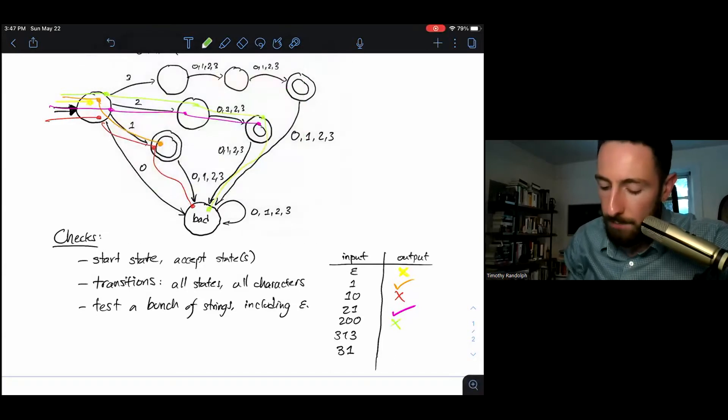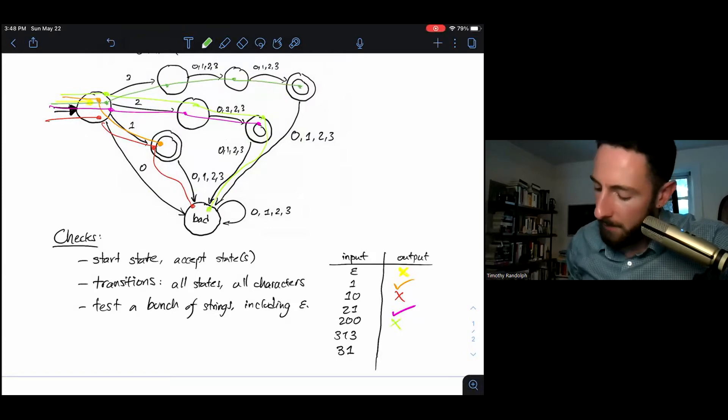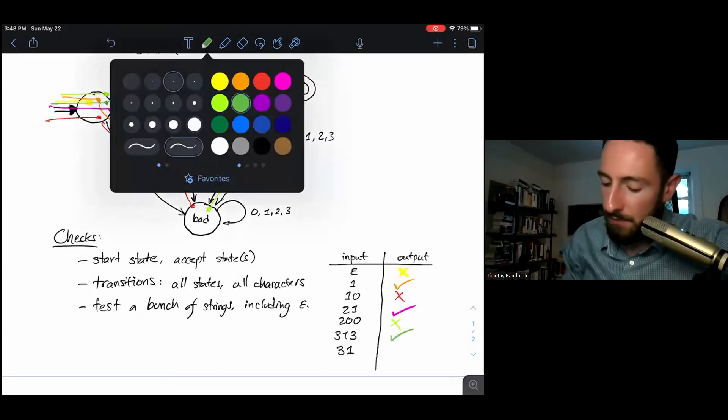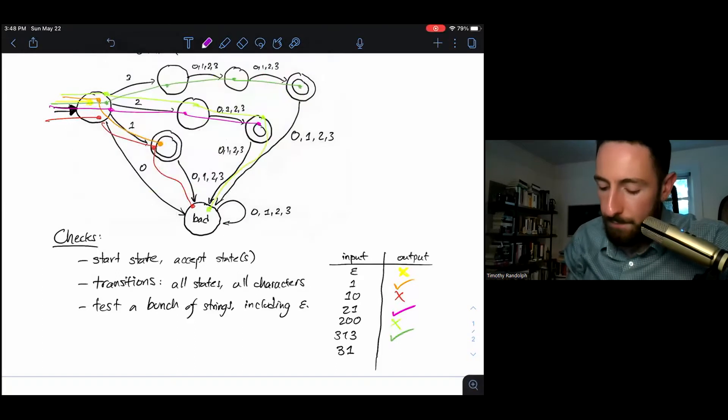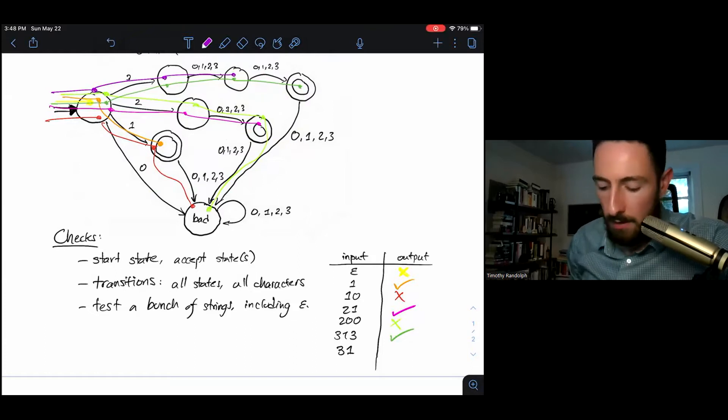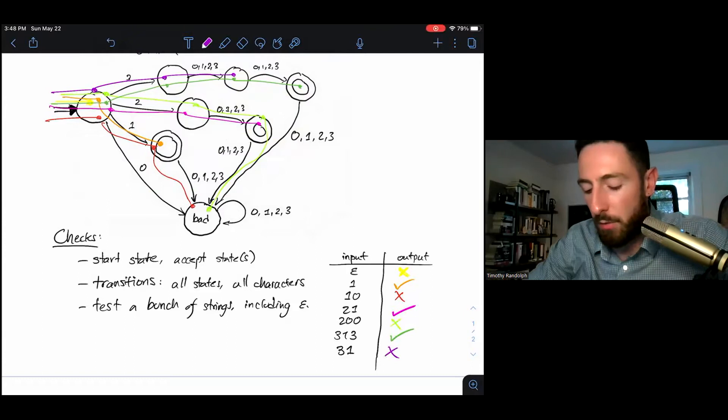Three-one-three: so we got a three, a one, and a three. That's an accept. And finally, three-one. That is a reject because we don't make it all the way to the accept state.